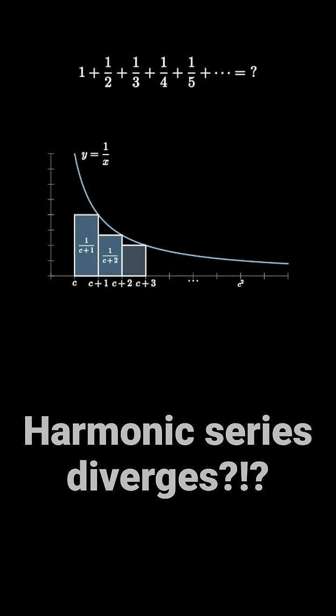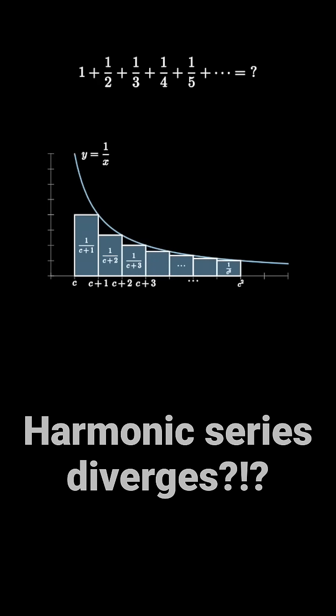Then the area 1 over c plus 1, plus 1 over c plus 2, plus 1 over c plus 3, and so on up to 1 over c squared can be represented by the area of the rectangles depicted here. But this geometric region contains a rectangle with area c squared minus c divided by c squared, pictured here.